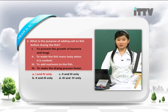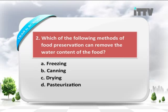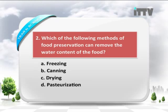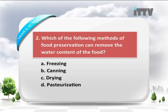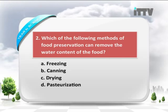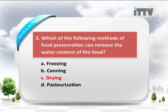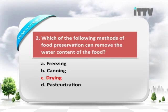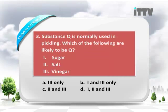Question two: Which of the following methods of food preservation can remove the water content of food? A — freezing, B — canning, C — drying, or D — pasteurization. The answer is C — drying can remove the water content of food.